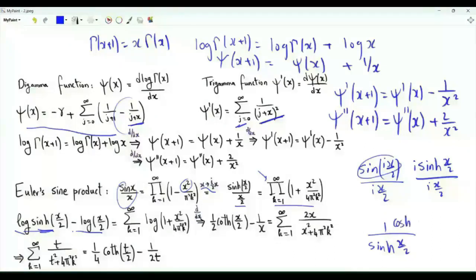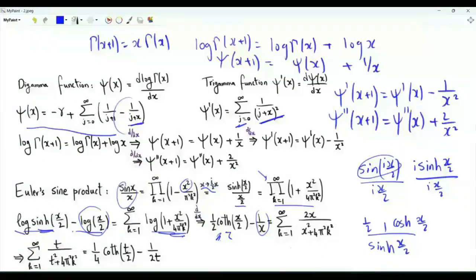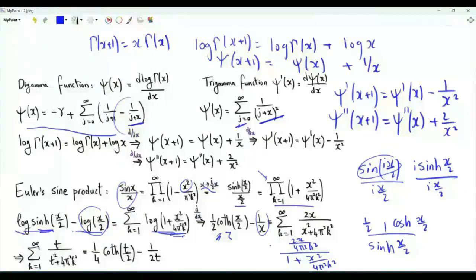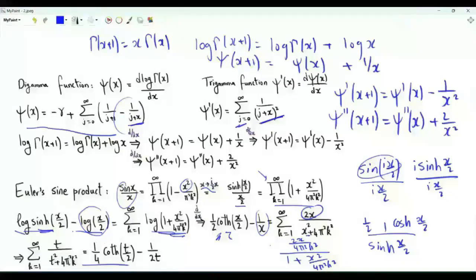Differentiating both sides with respect to x, the left side gives (1/2)·hyperbolic cotangent(x/2) minus 1/x. The right side yields summation over positive integers k of 2x/(x² + 4π²k²). Multiplying both sides by 1/2 and replacing x by t, we get the important result: (1/4)·coth(t/2) minus 1/(2t) equals summation k from 1 to infinity of t/(t² + 4π²k²).